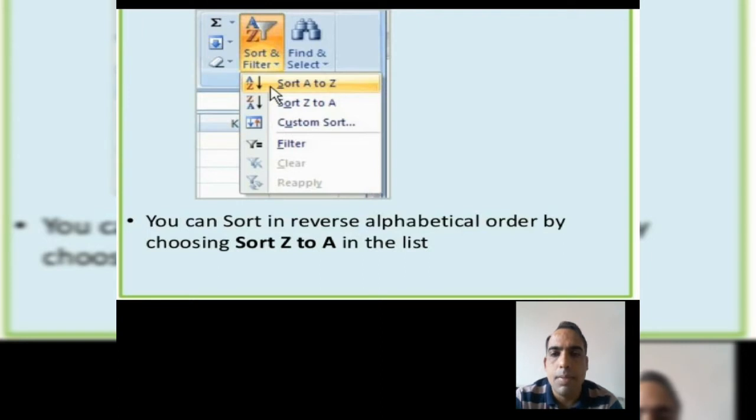You can see in this diagram, we have selected sort A to Z option. Now you can sort in reverse alphabetical order also by choosing sort Z to A in the list. You can see in this diagram.